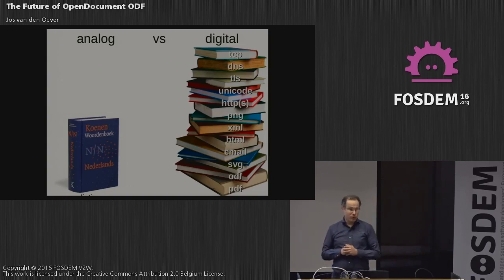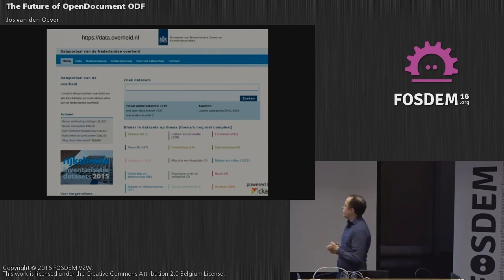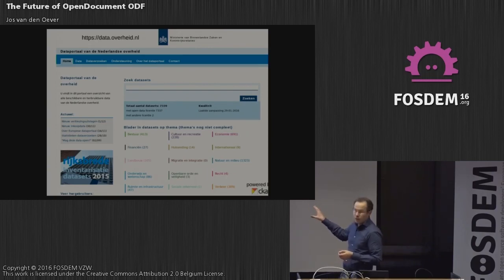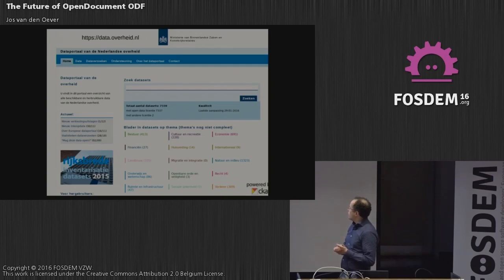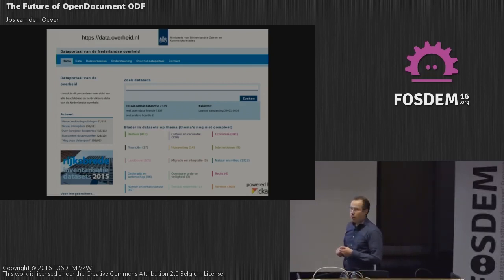Going towards this ambition, there are already quite a few things the government is doing digitally. One of them is putting data online — huge blobs of data about any topic you can imagine. This is the portal for the Dutch government: data.overheid.nl. You can search a lot of different datasets and get data in different file formats. The licenses are open for most datasets — 7,393 total, and only two don't have an open license. People are encouraged to reuse this data.